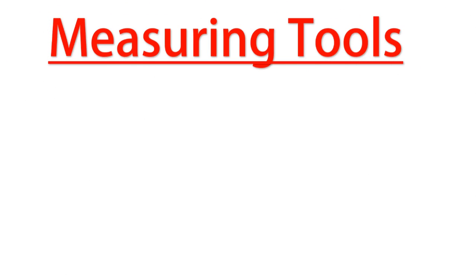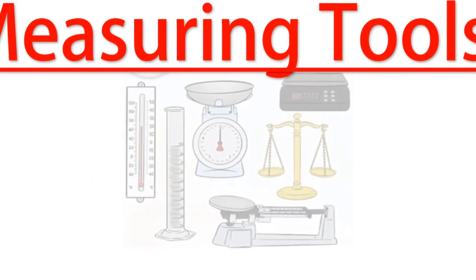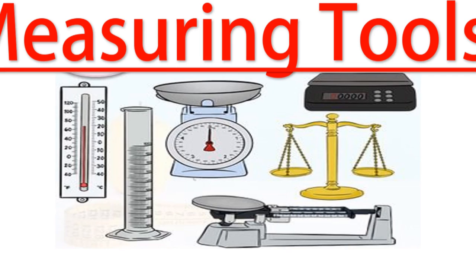In measuring matter, we need to have some measuring tools. Measuring tools will help us to measure the mass and the volume. For example, we have a graduated cylinder to measure the volume, and different balance scales like electronic scale, balance scale, lever scale, or triple beam balance.